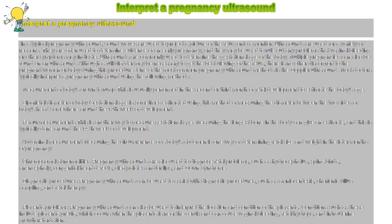Femur measurements: this is another way to measure gestational age. Measuring the longest bone in the body can give an estimate, and this is typically done around the fourteenth week of development. Abdominal measurement: measuring the circumference of a baby's abdomen is one way of determining fetal size and weight in the later months of pregnancy.